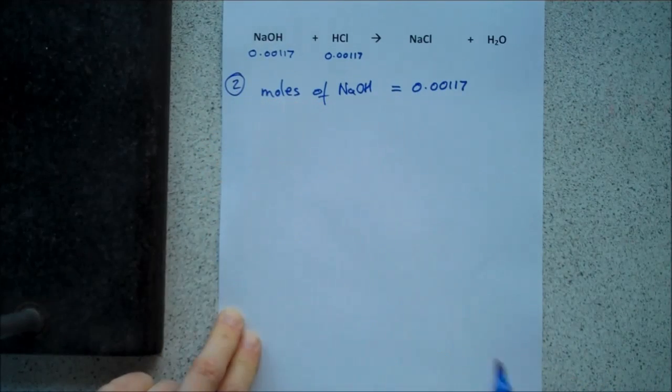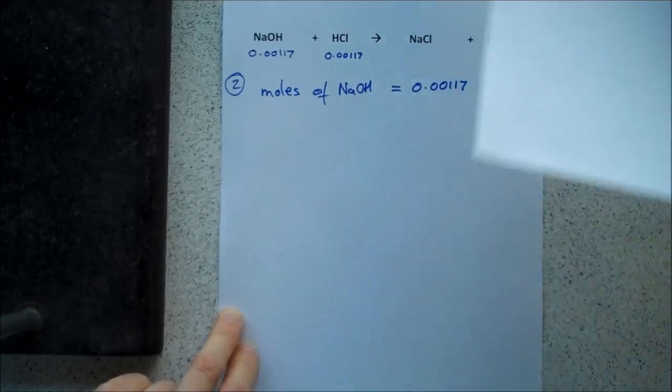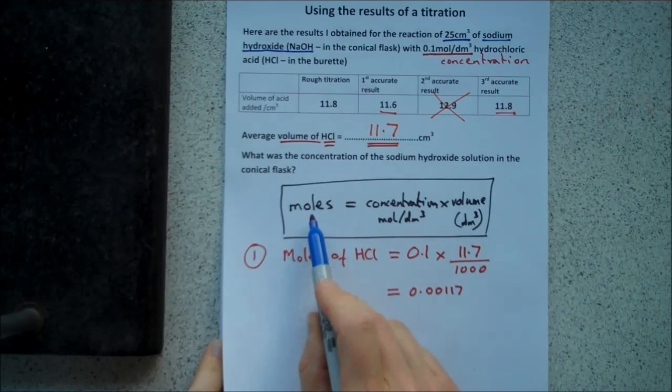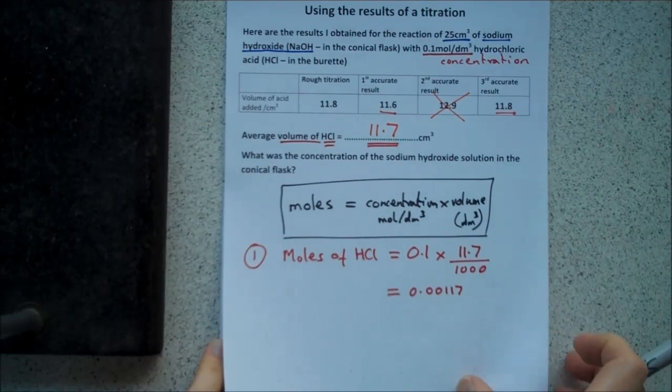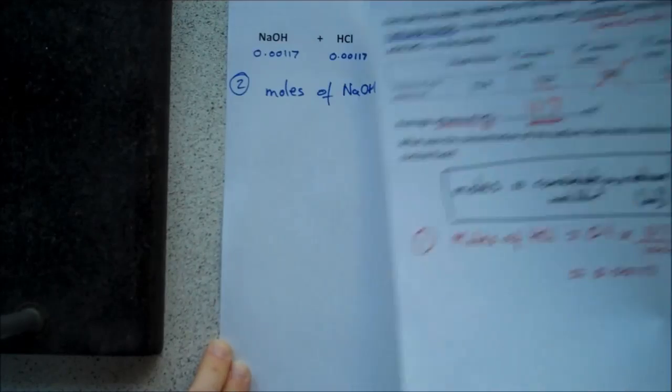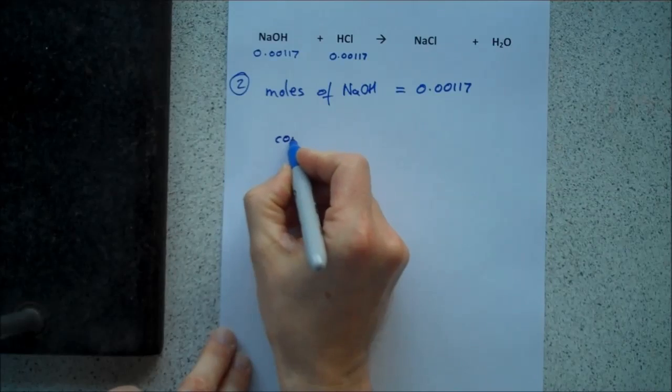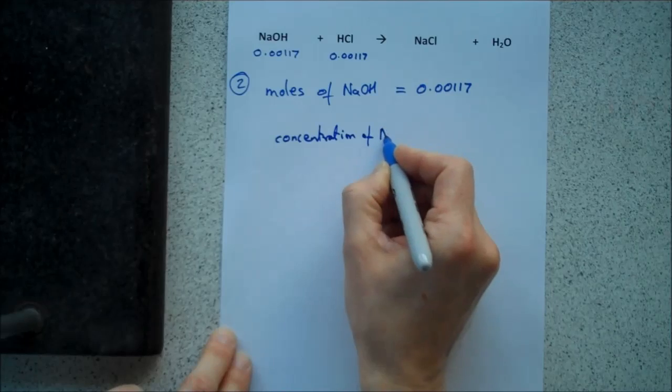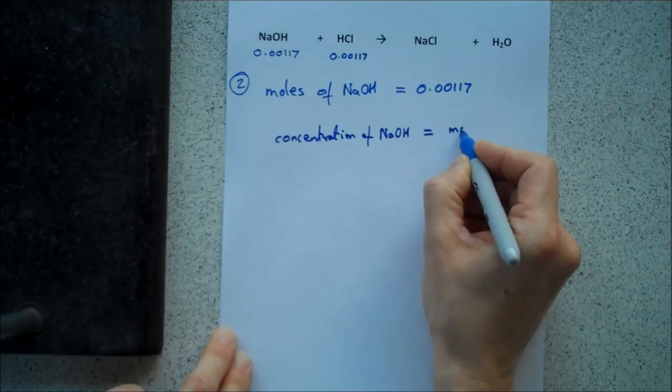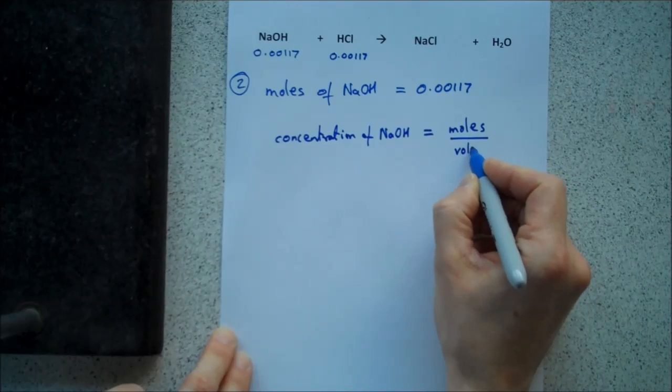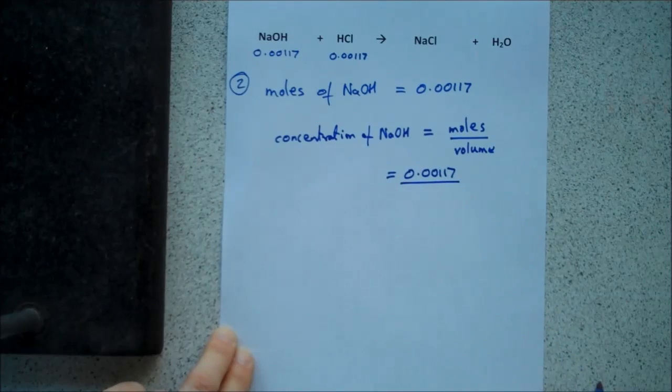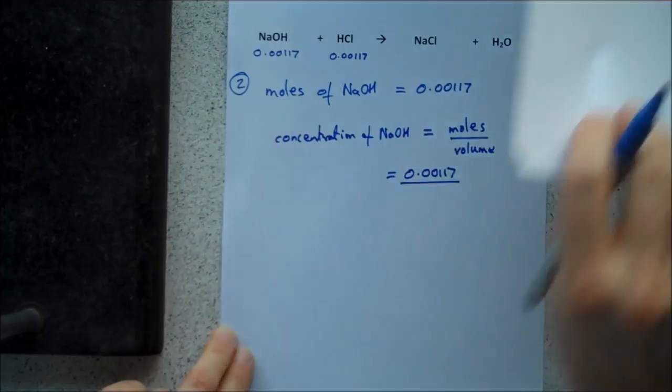The final step, that's basically step two. The final step of your calculation is now what did they ask you to find in the first place? If I show you the original question, it was what was the concentration of the sodium hydroxide? We need to use the equation again, moles, concentration and volume. But this time, because we're working out concentration, we rearrange it. So, we say concentration of NaOH equals moles divided by volume.